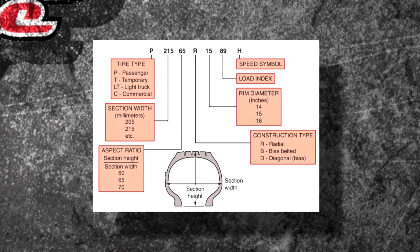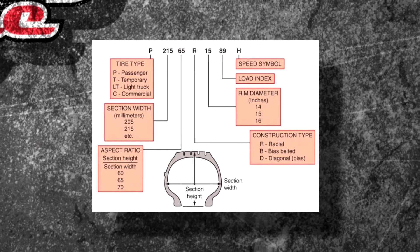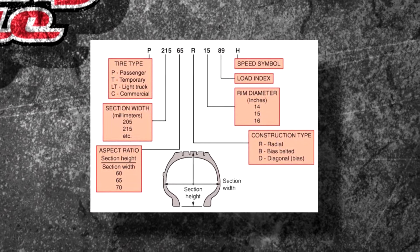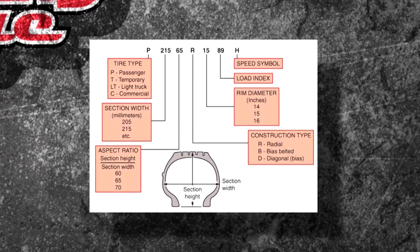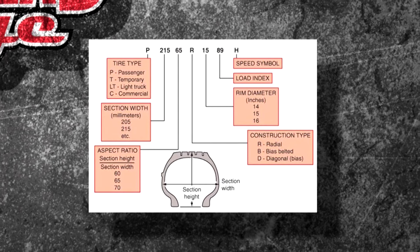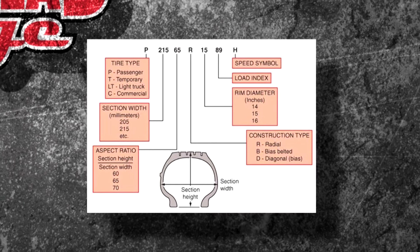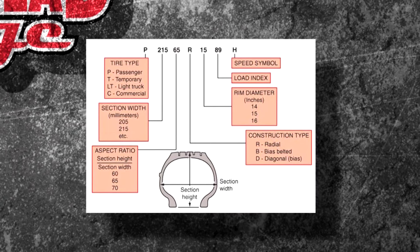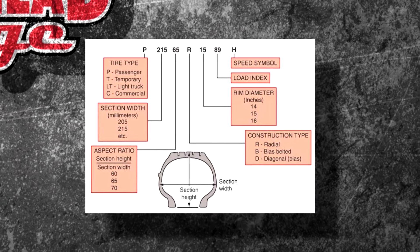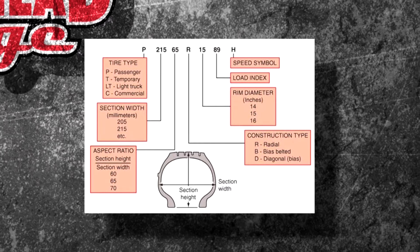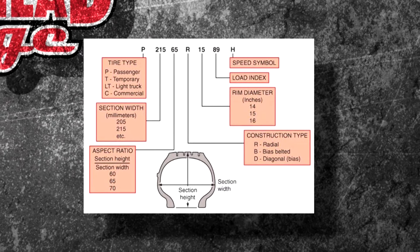The 'P' stands for passenger. If it was a 'T' it would be temporary, 'LT' is light truck, and 'C' is commercial. That next number — 215 — is the section width across the tread area. Then you have the aspect ratio, which is the section height divided by the width.